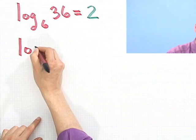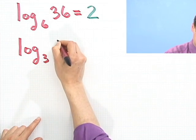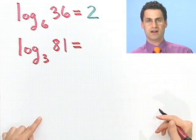Log base 3 of 81. Why don't you give this a shot right now? See if you can figure out what number I should write in here, remembering that a log is the exponent. Give it a shot.